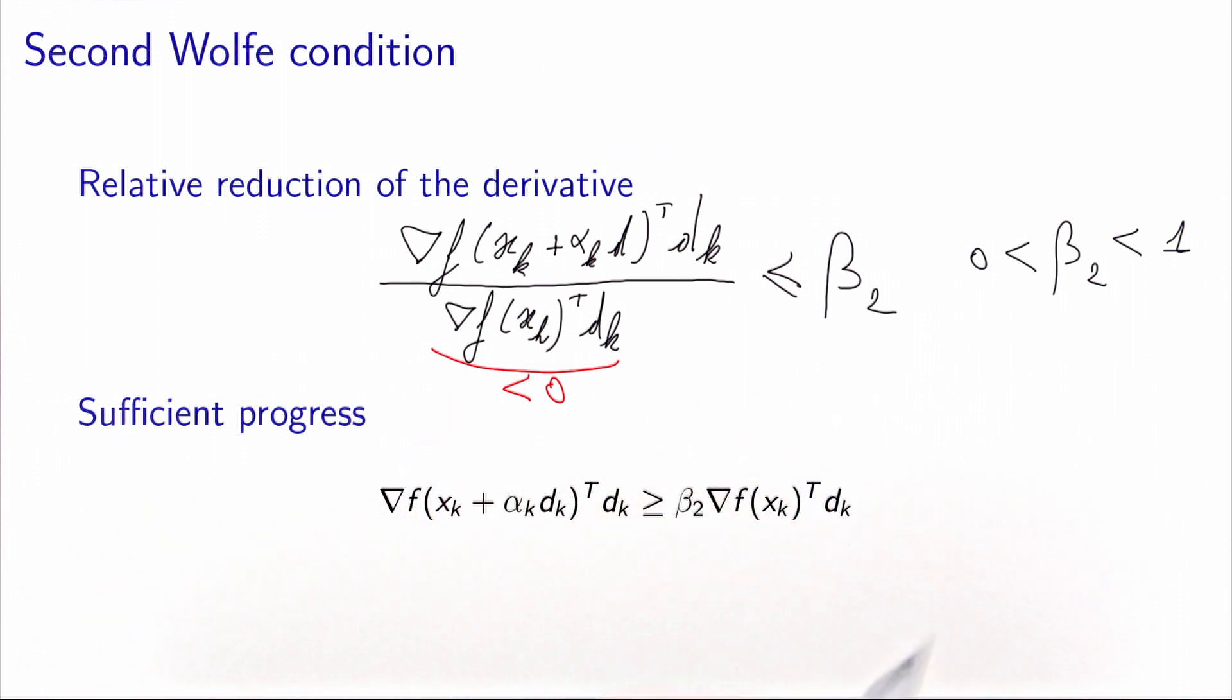Now because the denominator is negative, when we multiply this inequality by the denominator, the sign of the inequality is changed, and we obtain this condition, which is the second Wolfe condition. So if you look at this, if beta two is close to zero, it means that we would like the new value of the directional derivative to be close to zero. So it means that we would like to be close to the local optimum. If beta two is closer to one, we are not as demanding, and we allow for small increases of the value, so we allow the new value to be close to the previous one. So this is less demanding. It gives more flexibility to the algorithm.